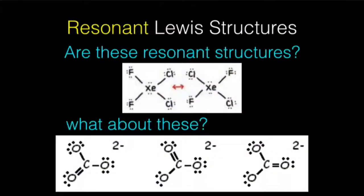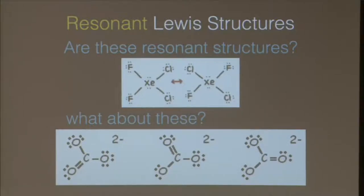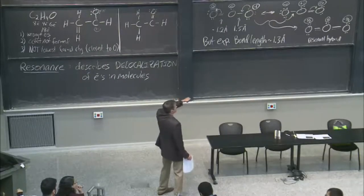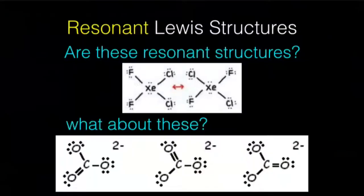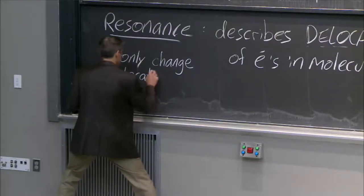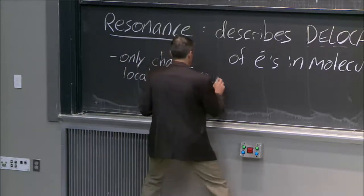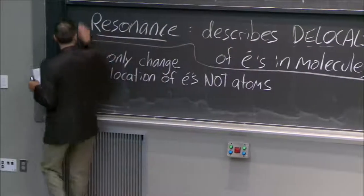Is this a resonance structure? The answer is no. The reason is that resonance structures only involve the curvy-arrow motion of electrons, not of atoms. Notice I cannot get from one structure to the other without moving an atom — that's not a resonance structure. Key rule: we change the location of electrons, not atoms.